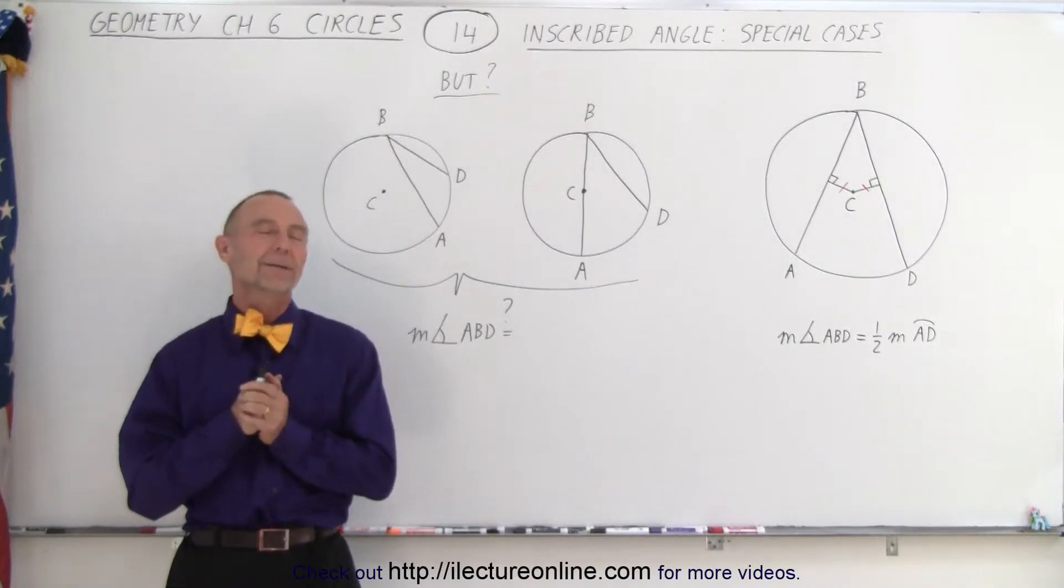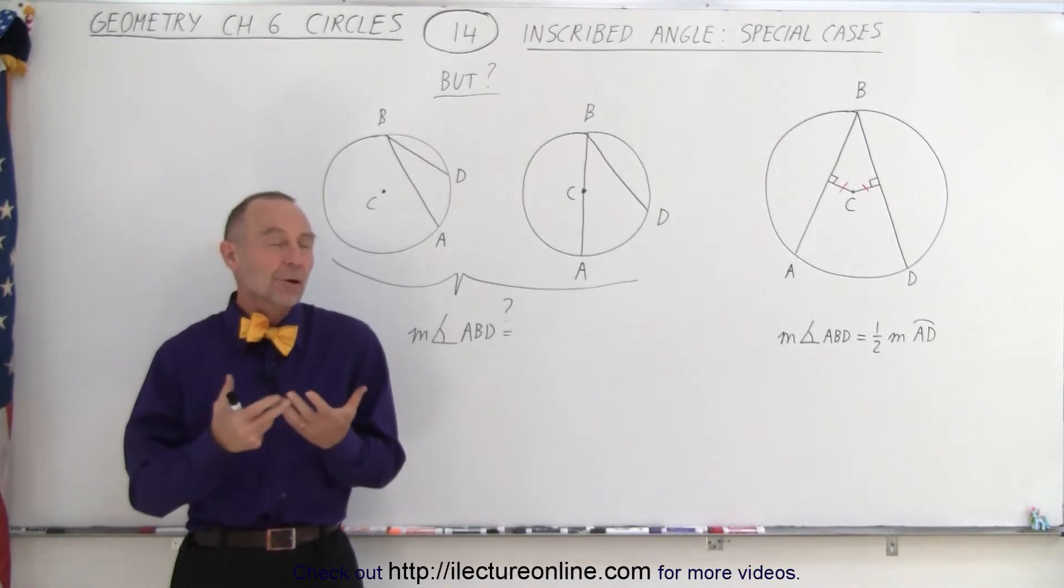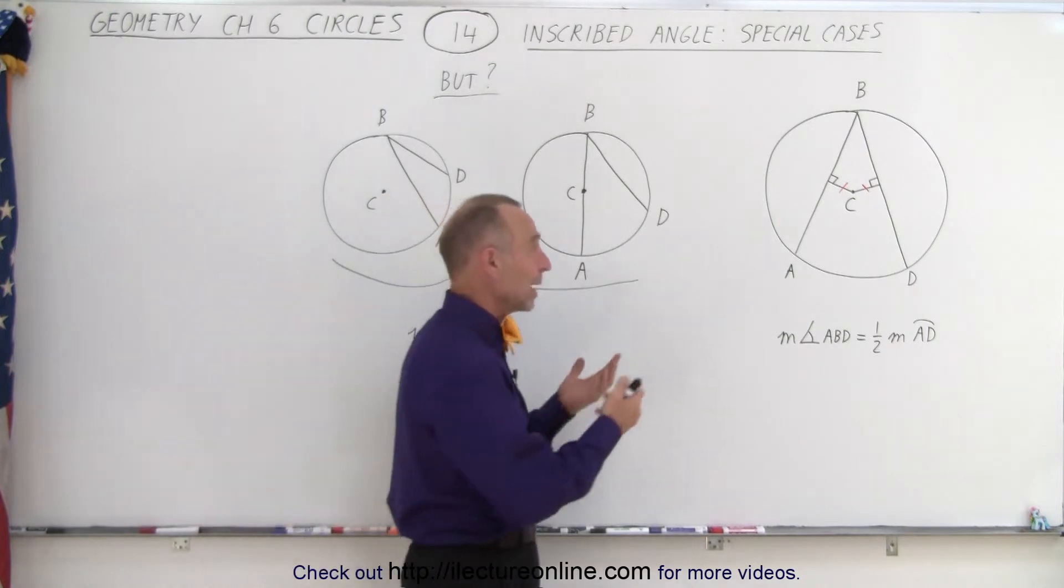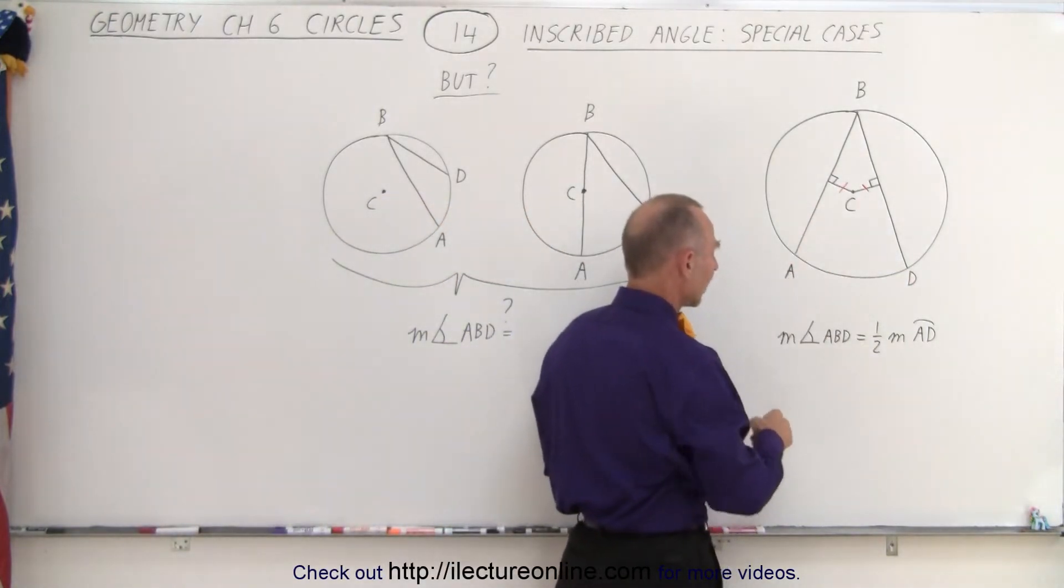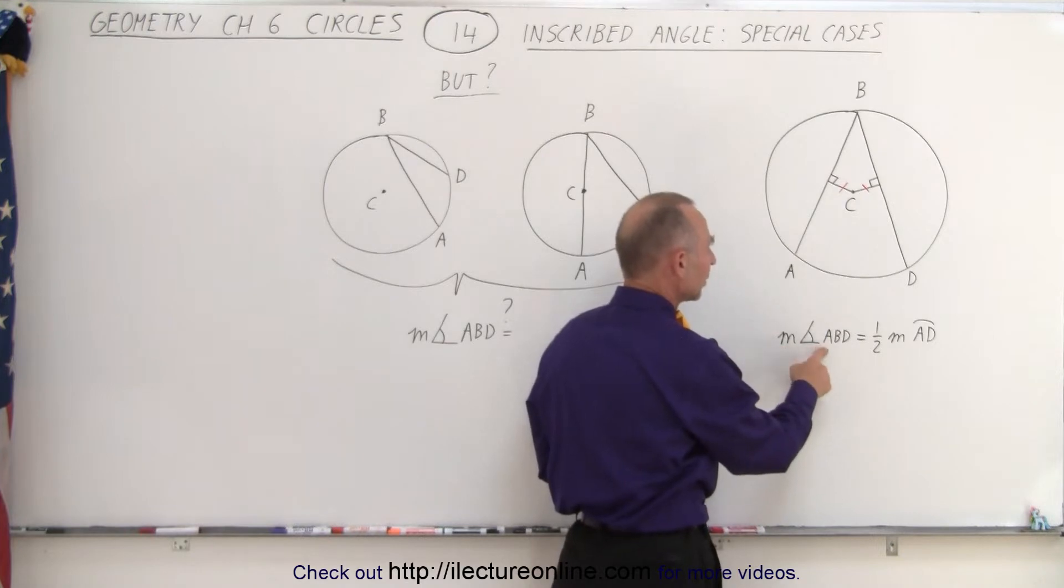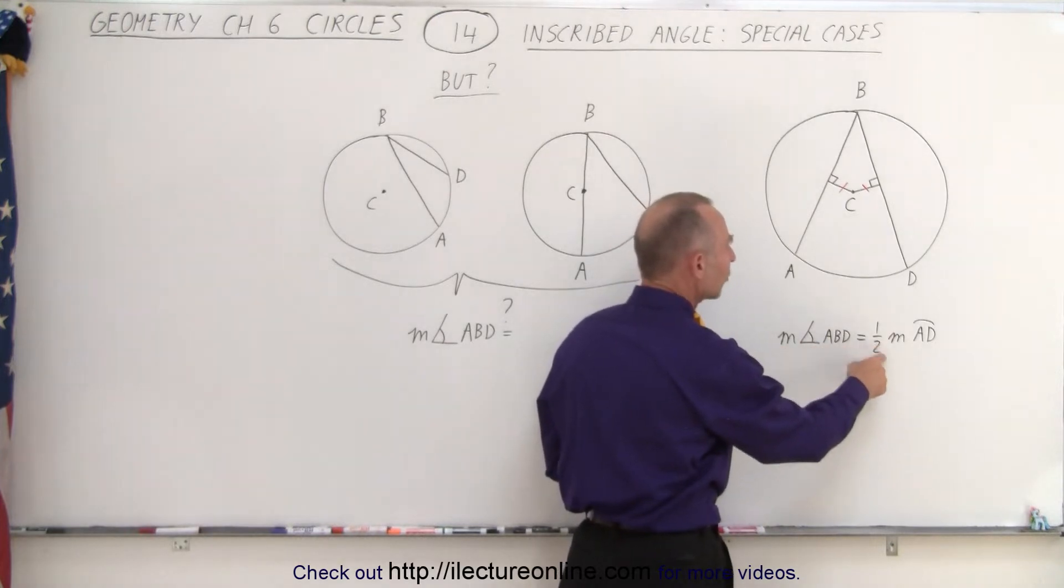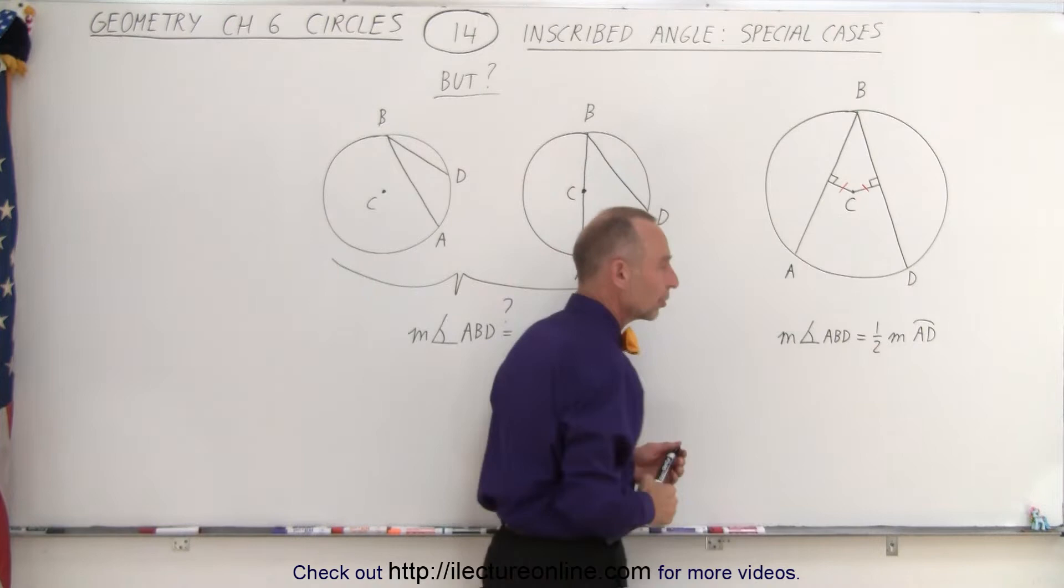Welcome to Electronline. So in the previous video we saw that if we have an inscribed angle inside a circle that the measure of the inscribed angle ABD is equal to one-half the measure of the intercepted arc.